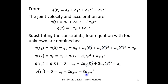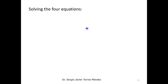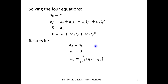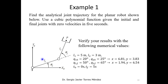Substituting the constraints results in four equations. From these four equations, we can find the four coefficients: a0, a1, a2, and a3. Solving these four equations gives us the coefficients, which we can then substitute back into our three equations of motion for position, velocity, and acceleration.